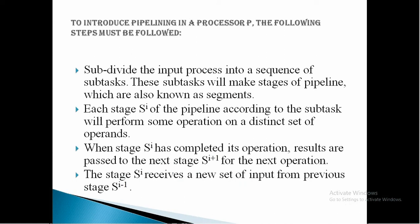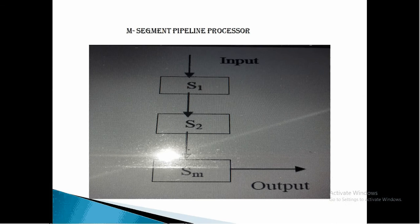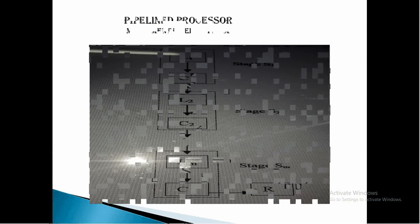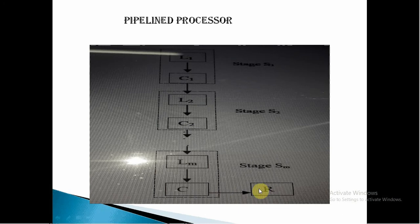In this way, parallelism in a pipeline processor can be achieved such that M independent operations can be performed simultaneously in M segments. The stages or segments are implemented as pure combinational circuits performing arithmetic or logical operations over the data streams flowing through the pipe. Latches are used to separate the stages. Latches are fast registers to hold intermediate results between the stages. Each stage SI consists of a latch LI and a processing circuit CI, with the final output in output register R. The flow of data from one stage to another is controlled via a common clock. Thus, in each clock period, one stage transfers its result to another stage.